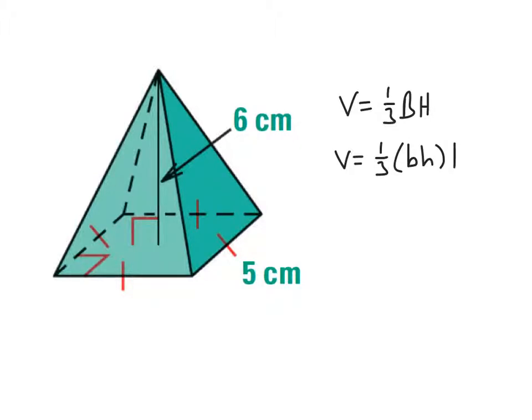Base times height, absolutely. Okay, and so now we go and plug in here. So we have one-third times five times five. It's the base and the height of the square. And then I've got to multiply that by six, which is the height of the pyramid.